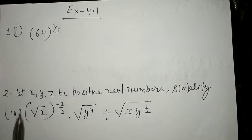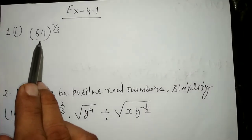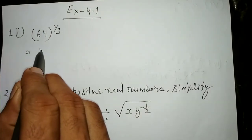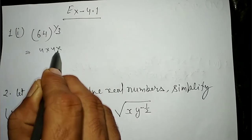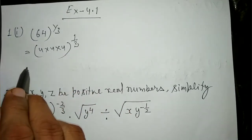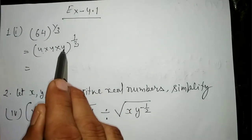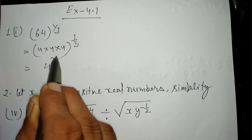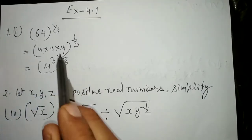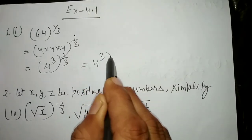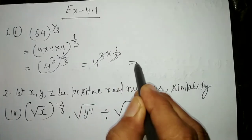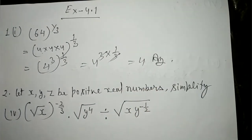Exercise 4.1: 64 के factors करेंगे — 4×4×4 = 64, so 64 to the power one upon three = (4 cube) whole power one upon three. Power के ऊपर power का multiply हो जाता है: 4 cube into one upon three — 3 और 3 cancel हो जाएगा, is equal to 4. यह answer हो जाएगा।